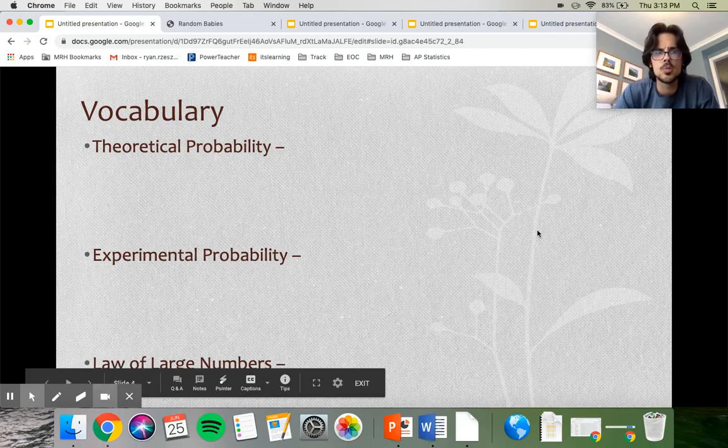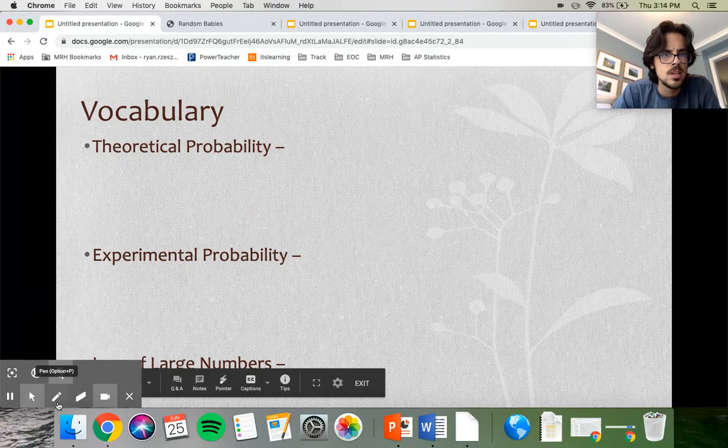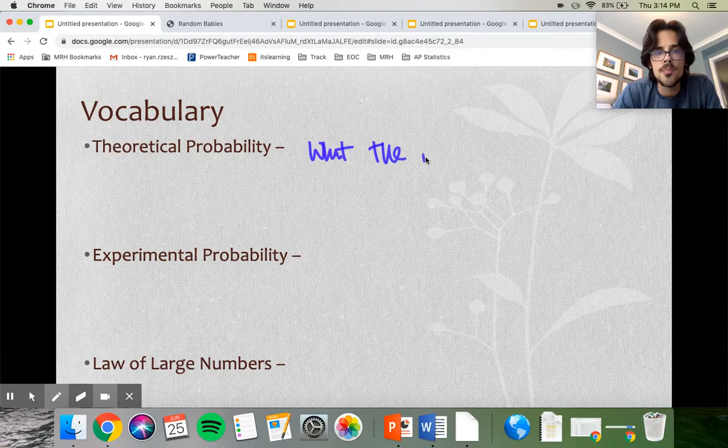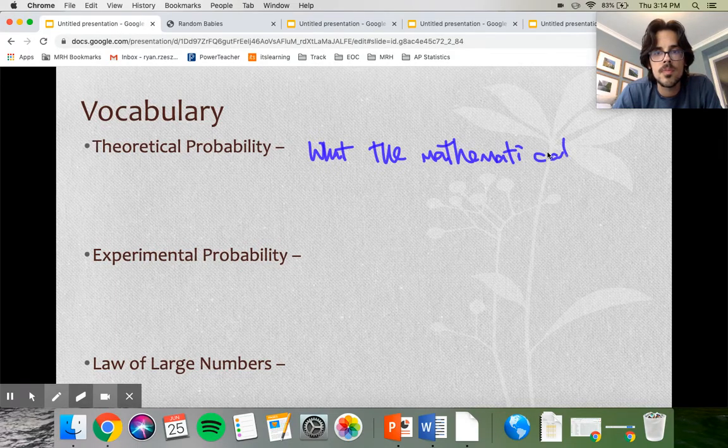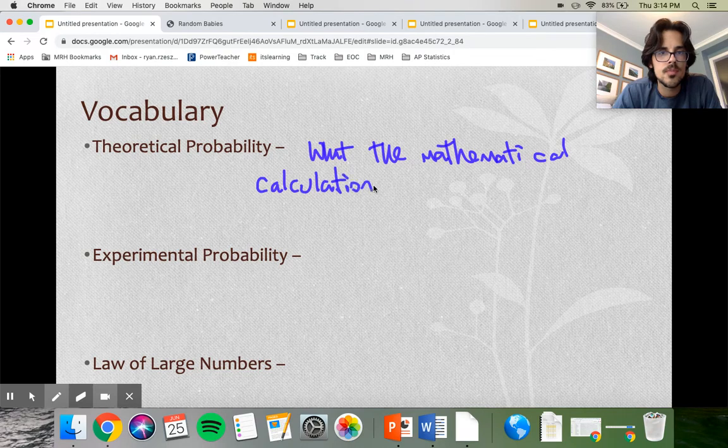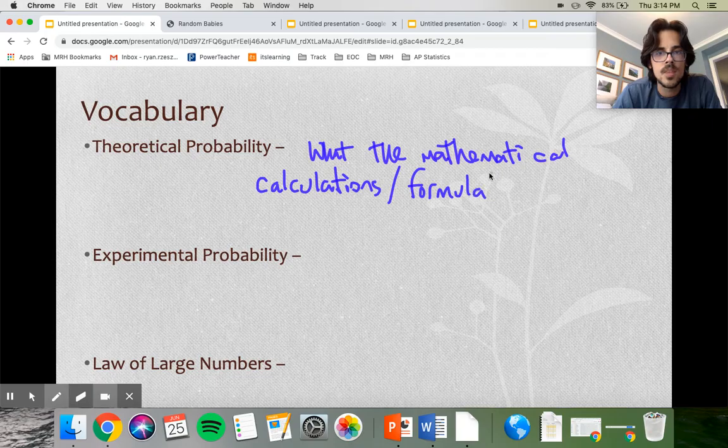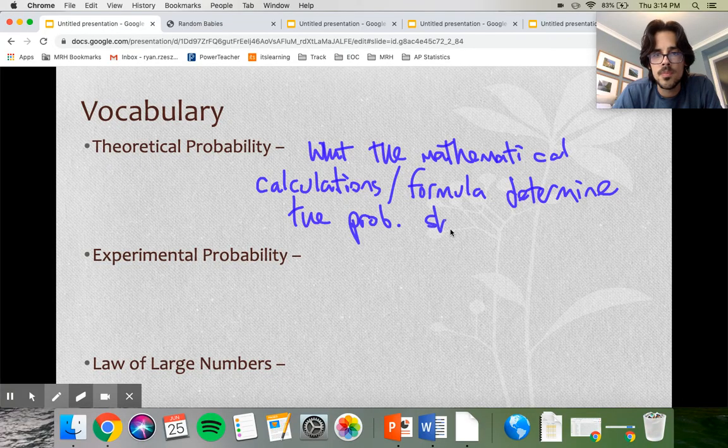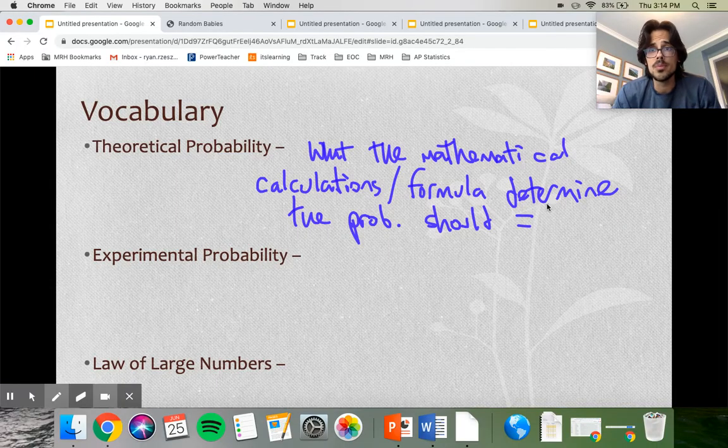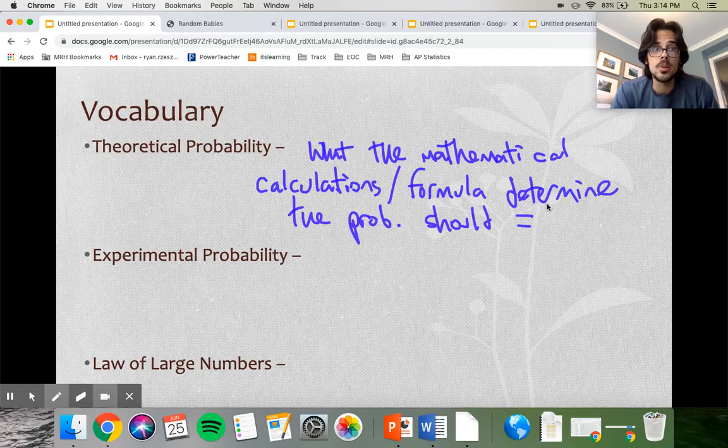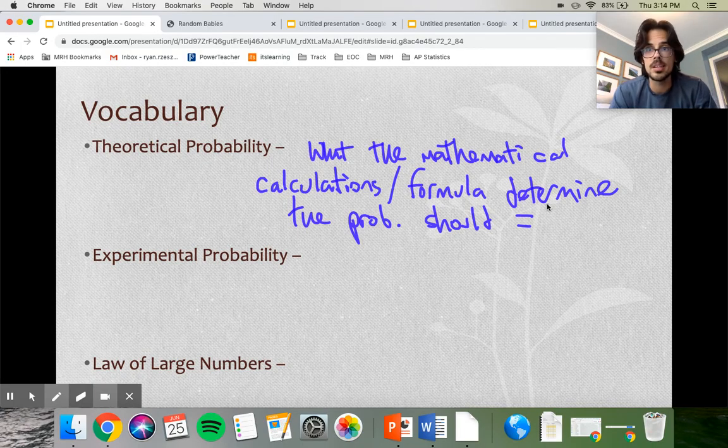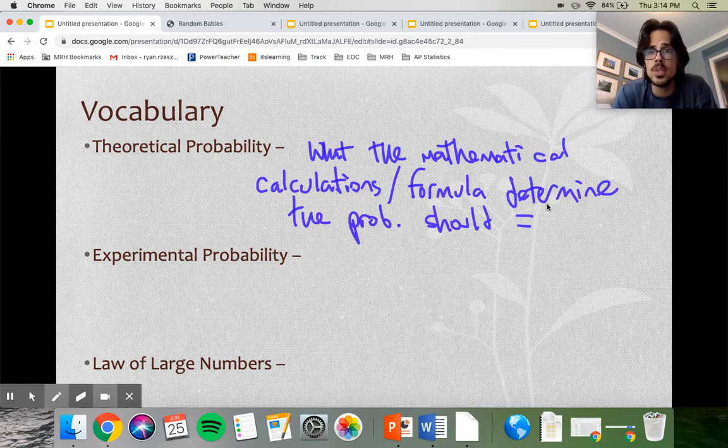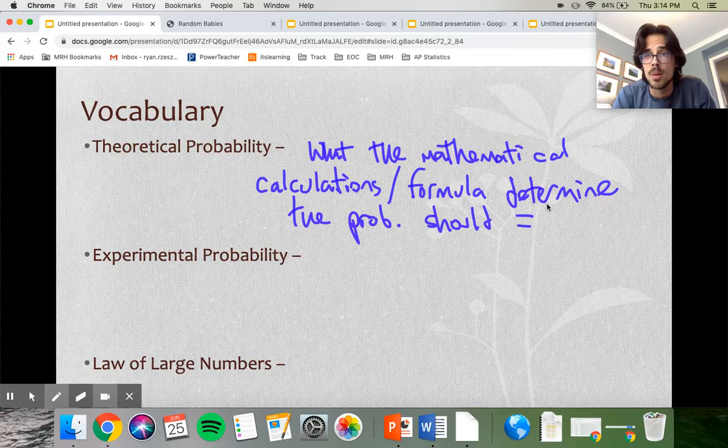We have a distinction between theoretical and experimental probability. Theoretical probability is what the mathematical calculations or formula determine the probability should equal. Example of that, the theoretical probability of flipping a coin and having it land on heads is a half. The probability of rolling a die, one through six, and having it land on one is one out of six. That's just using common sense or math. If you did math to get your answer and you ran a formula of some sort, that's a theoretical probability.